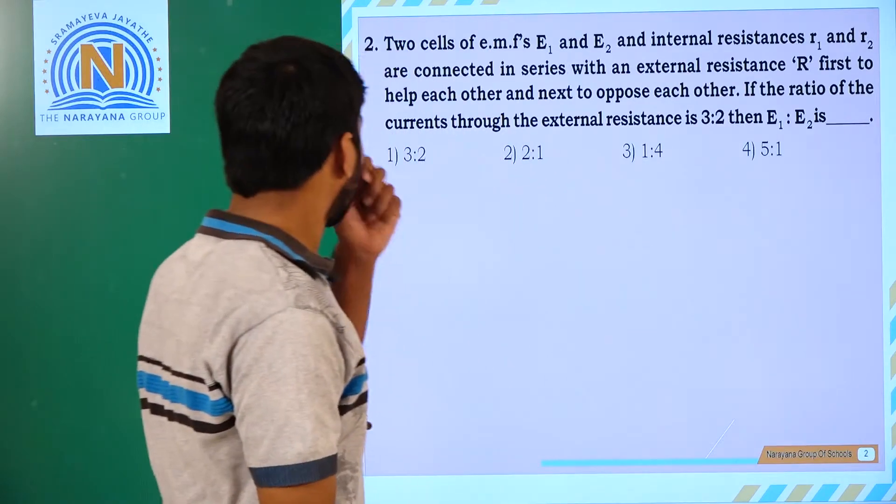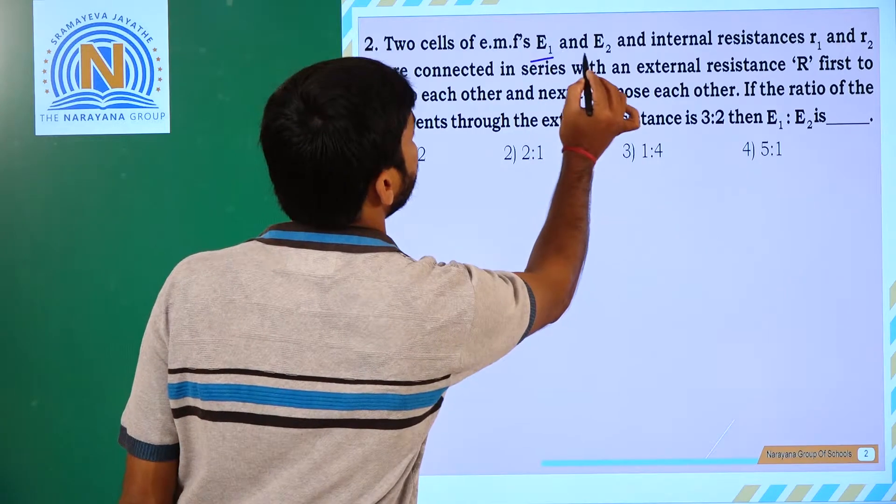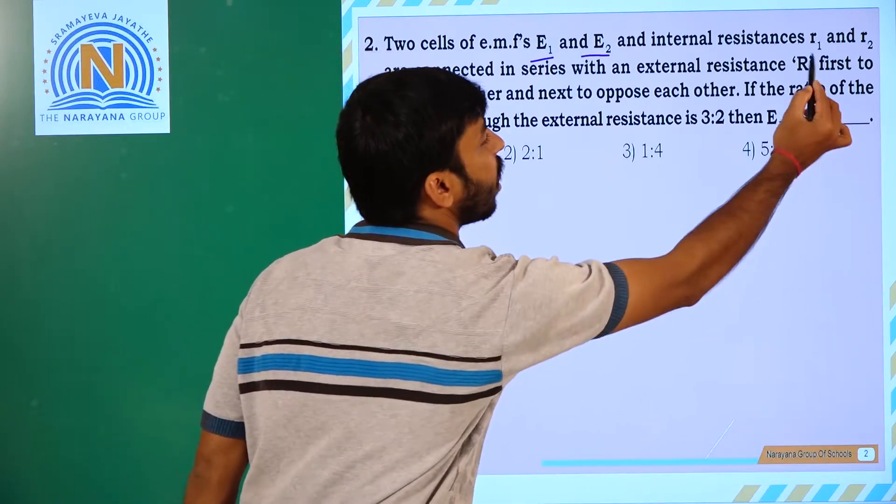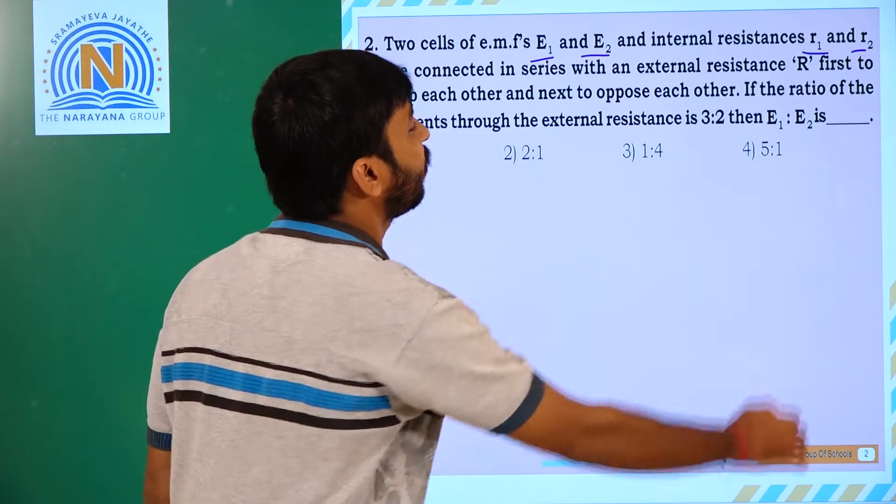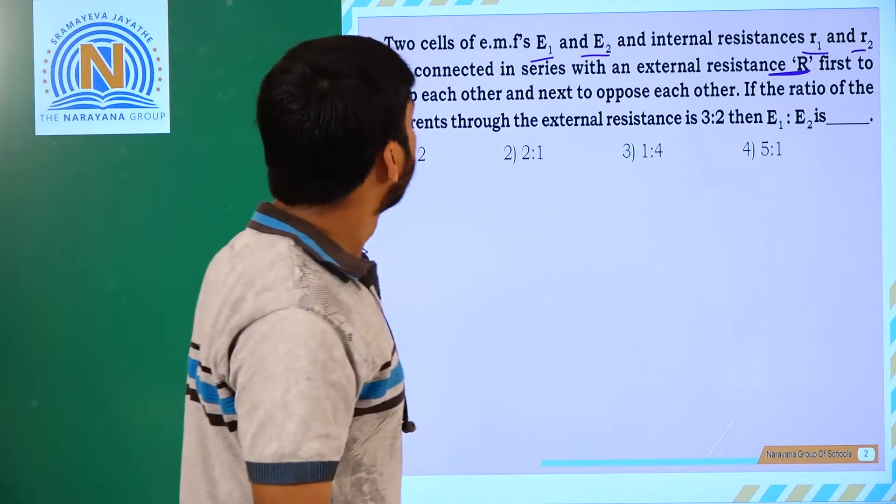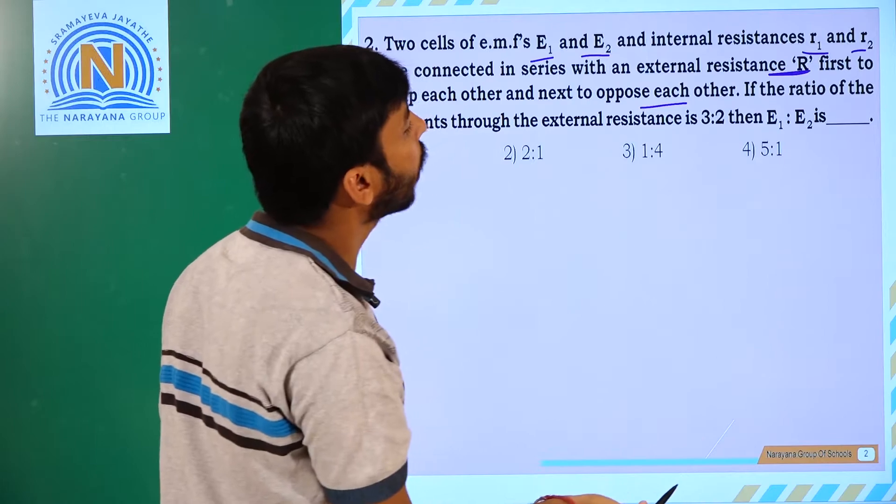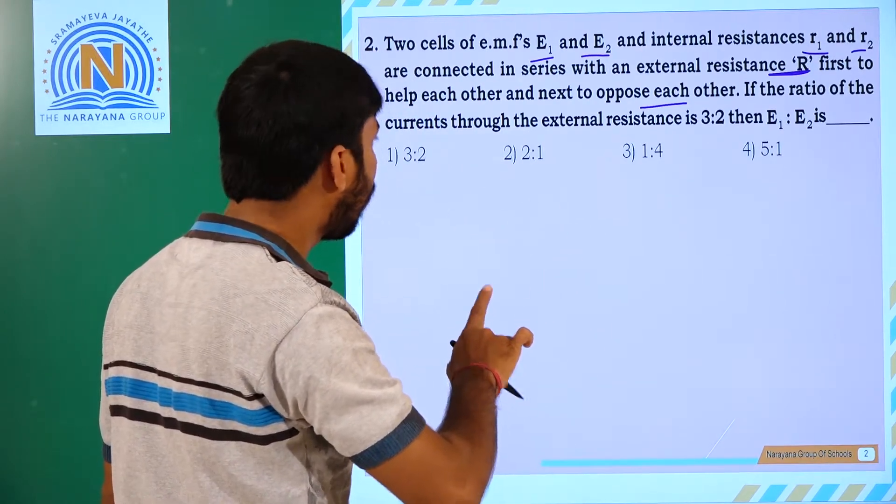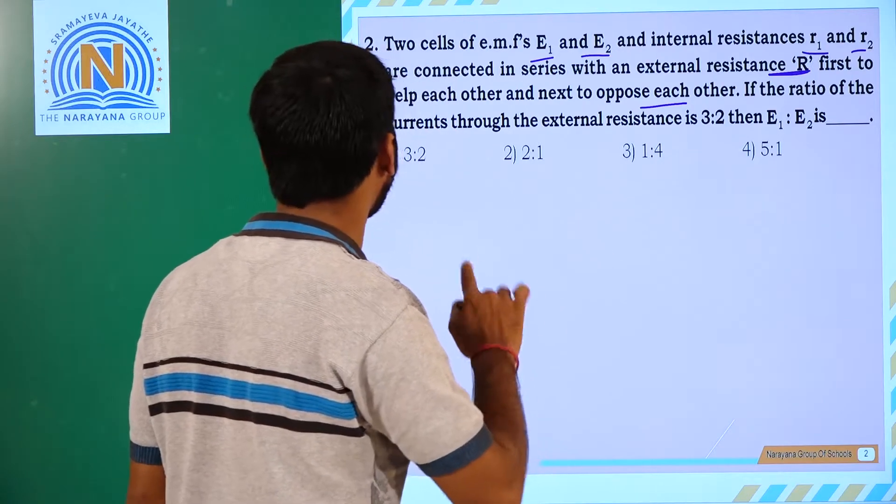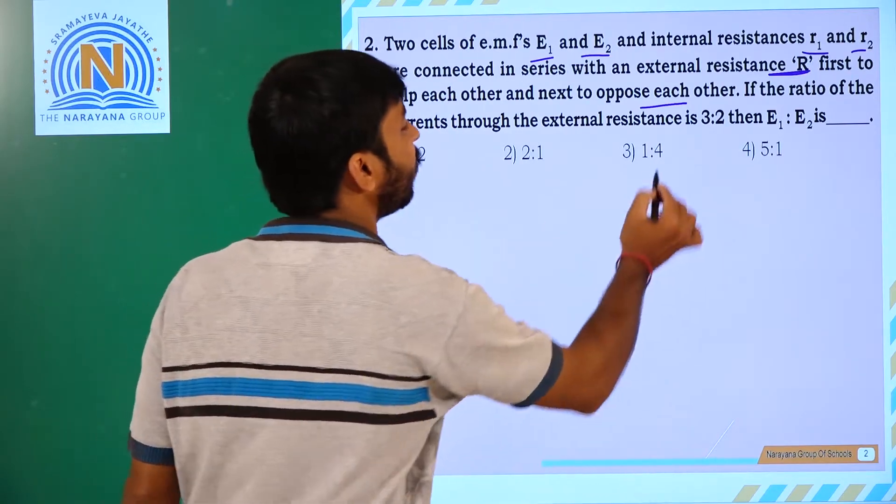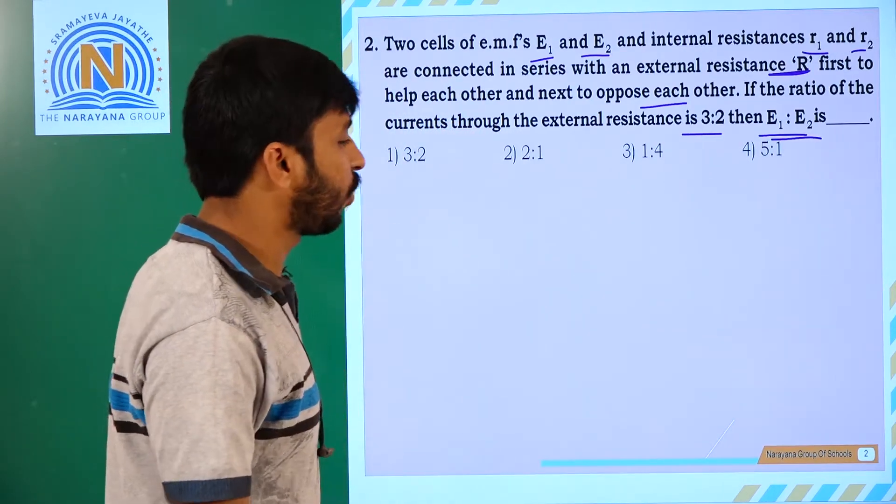Next, two cells of EMF E1 and E2 and internal resistance R1 and R2 are connected in series with an external resistance R. First two help each other and next opposes each other. If the ratio of the current through the external resistance is 3 by 2, what is the ratio? We need to find this out.